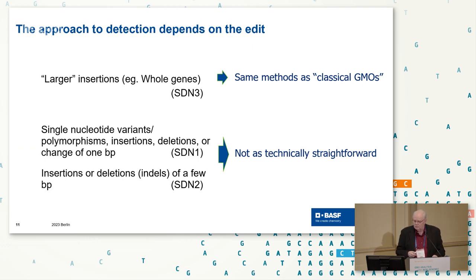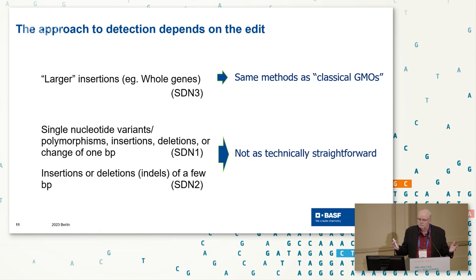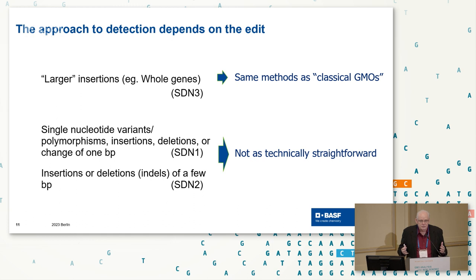The question is: once an edit is made, how do we detect it? For SDN3s, that's not an issue — we have a big chunk of DNA inserted, and it's basically classical GMO methods. When it's a single base or a few base pairs, it's not technically straightforward. We don't have enough instances where we know we can reliably do this.